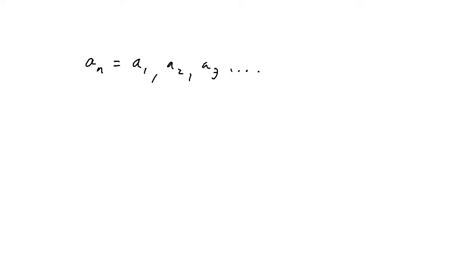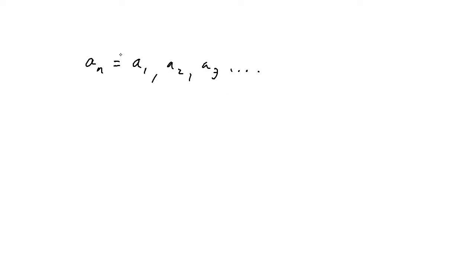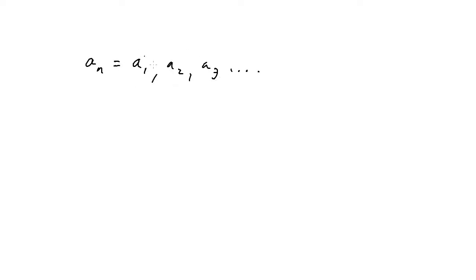In the next section we'll talk about series. The difference between a sequence and a series: a sequence is just a list of terms, while a series is the sum of the listed terms — a_sub_1 plus a_sub_2 plus a_sub_3 and so on forever.